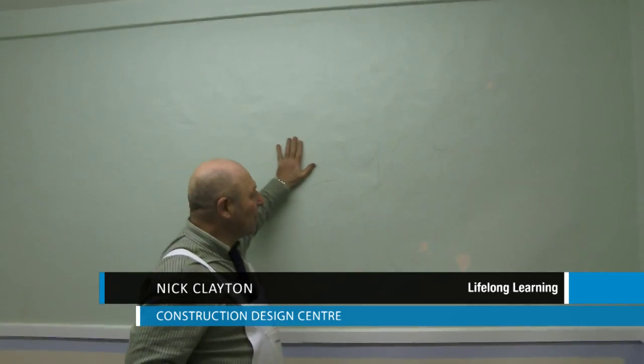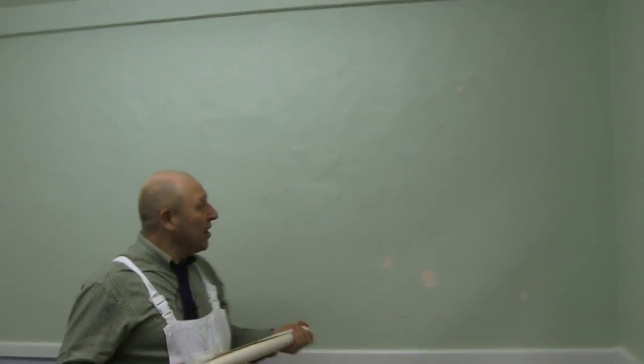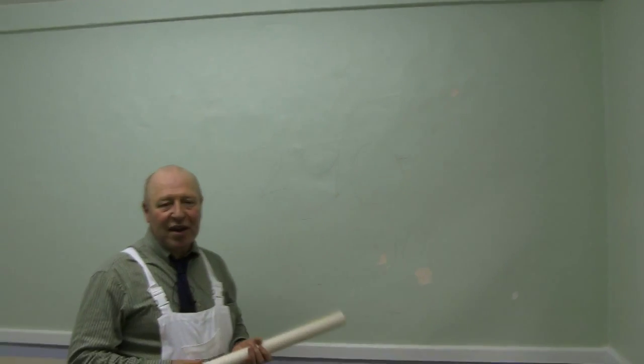We've now moved into a bay where we're going to do cross-lining paper. This is the wall we're going to work on. It's already been pre-stripped. It was papered before. We've stripped it to make it all ready to go.